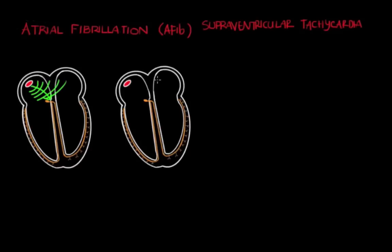However, in AFib, the wavelets are in disarray — notice how they're all erratic and going everywhere. Because you lose this organized signal, you're not going to have the unified contraction of the atria. Instead, with these erratic wavelets, you're going to have atrial spasming.